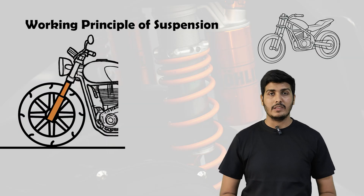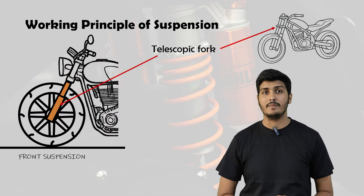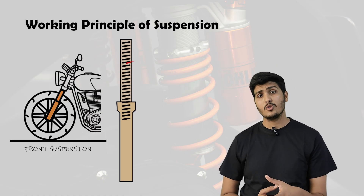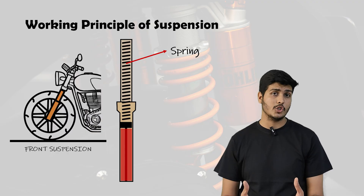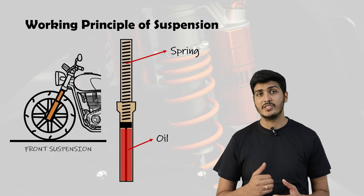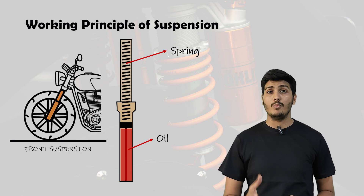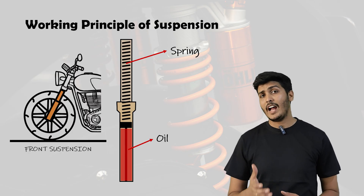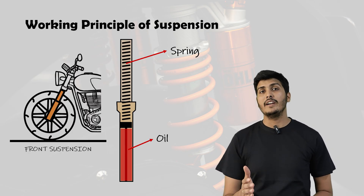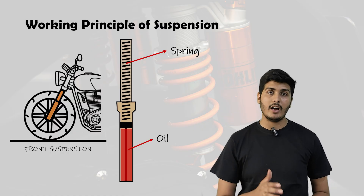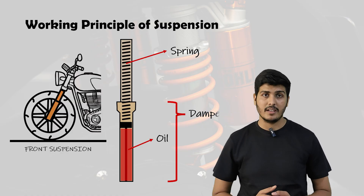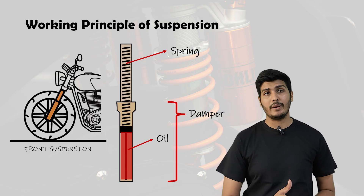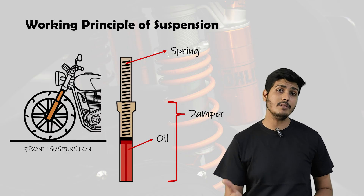Now we will add the front suspension. Most bikes use a telescopic fork in the front suspension — basically two tubes that slide into each other like a telescope. Inside this telescope we have a spring that controls the shock and oil which controls how fast it moves. A spring is a compressed coil which absorbs the energy when you hit a bump and tries to return to its original shape. It gives you a soft cushioning effect, but if you only have the spring the bike will keep bouncing up and down like a pogo stick — and that's where the damper comes in. A damper, usually filled with oil and gas, controls the speed of spring movement.